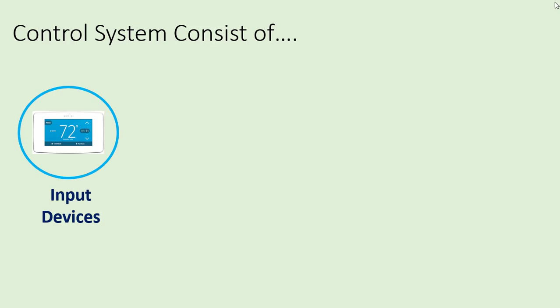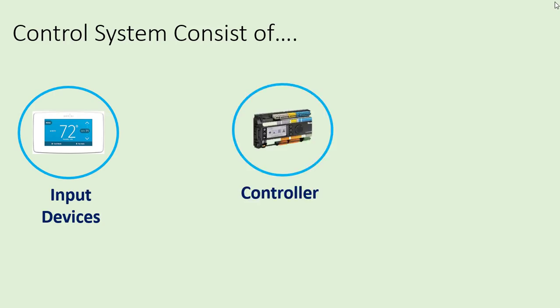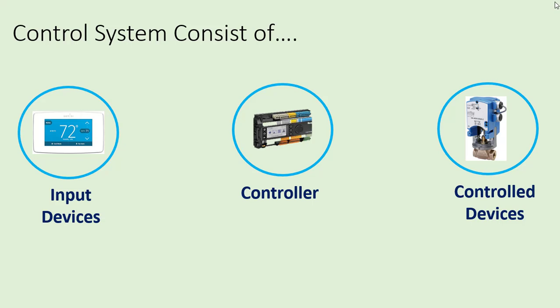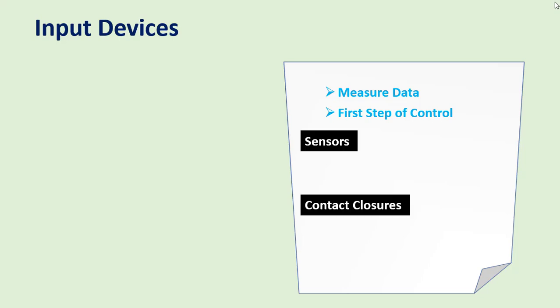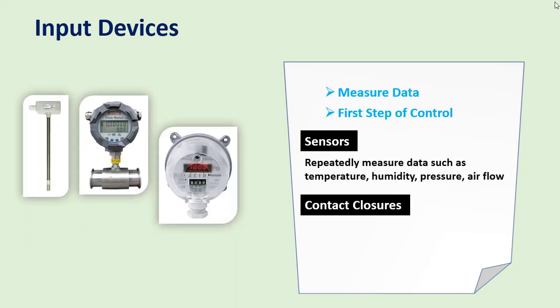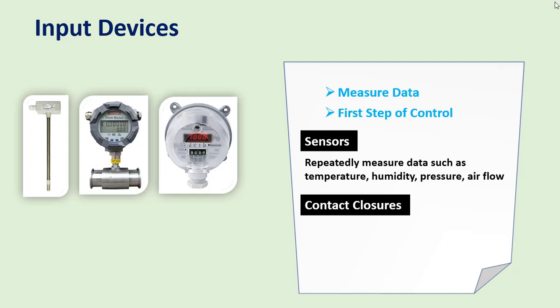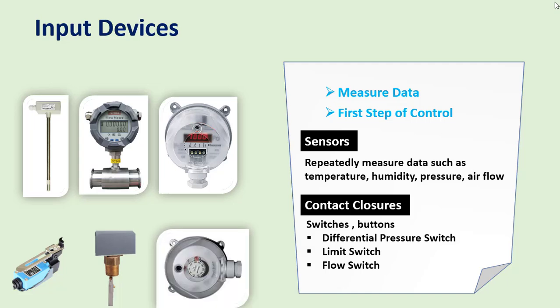A control system consists of input devices, a controller, and output devices — also known as controlled devices. Input devices measure data and are the first step of control. These can be sensors and contact closures. A sensor repeatedly measures data such as temperature, humidity, pressure, and airflow, while contact closures are switches and buttons. Examples include differential pressure switches, limit switches, and flow switches.